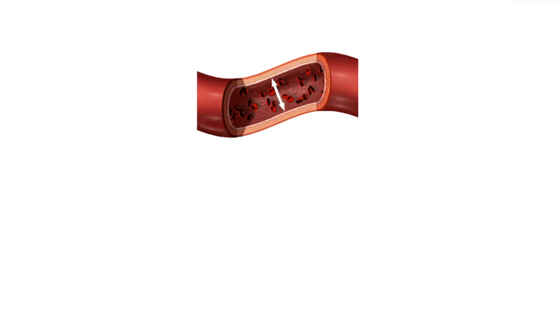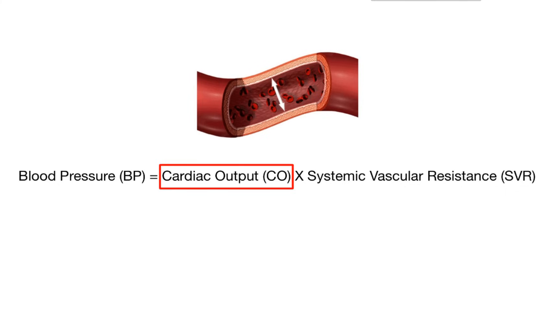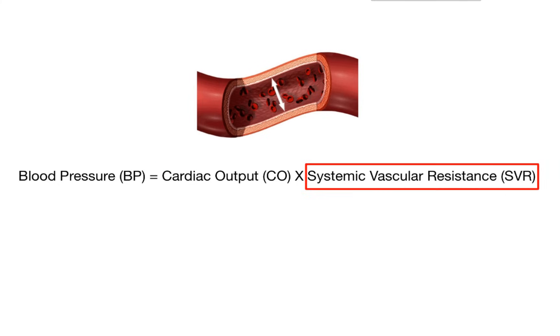systemic vascular resistance, elasticity of the arterial walls as well as blood volume. In other words, blood pressure is simply a product of cardiac output and systemic vascular resistance.